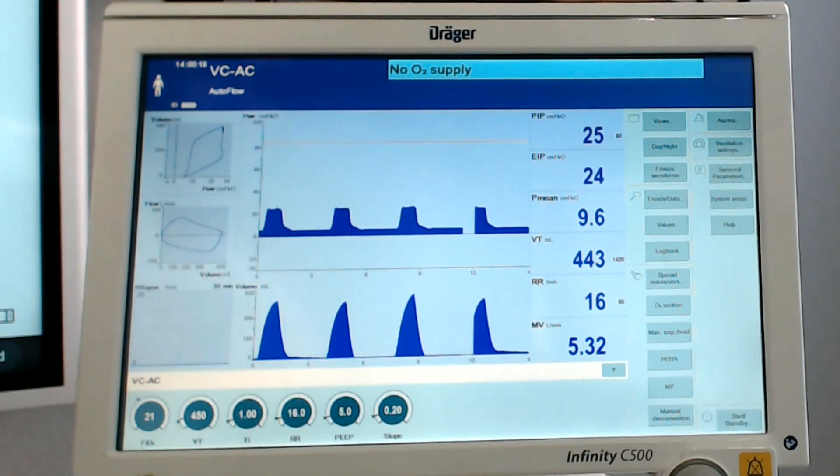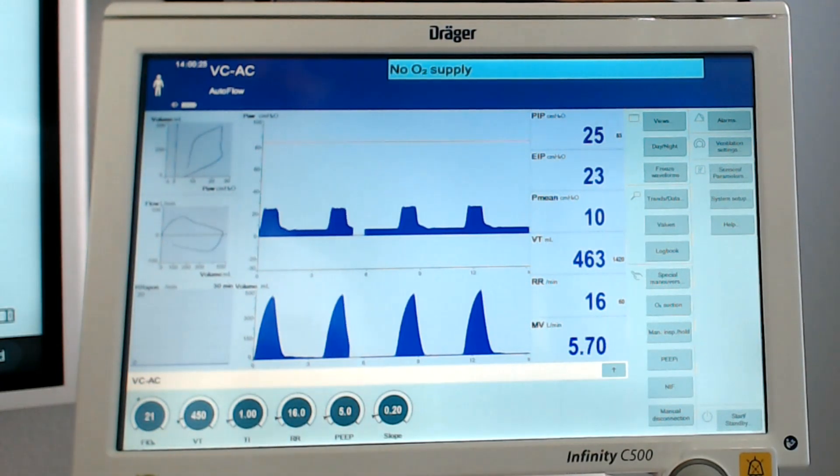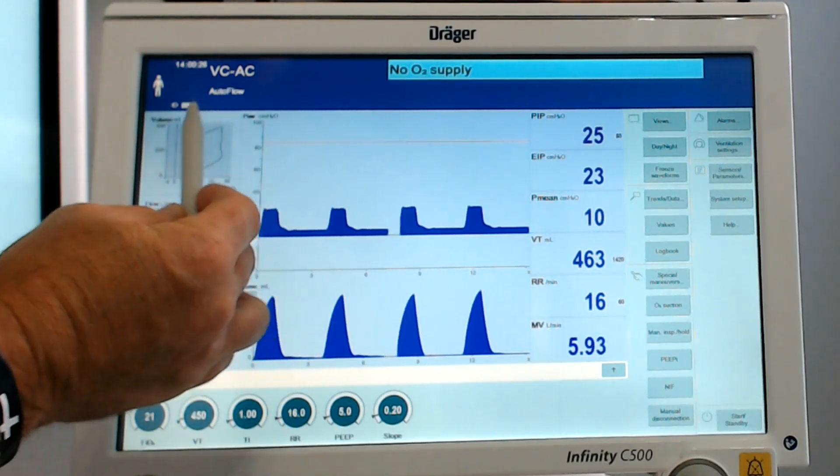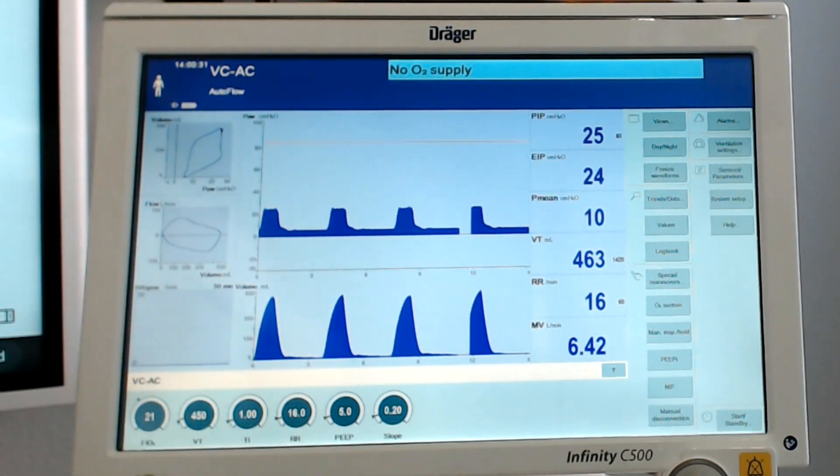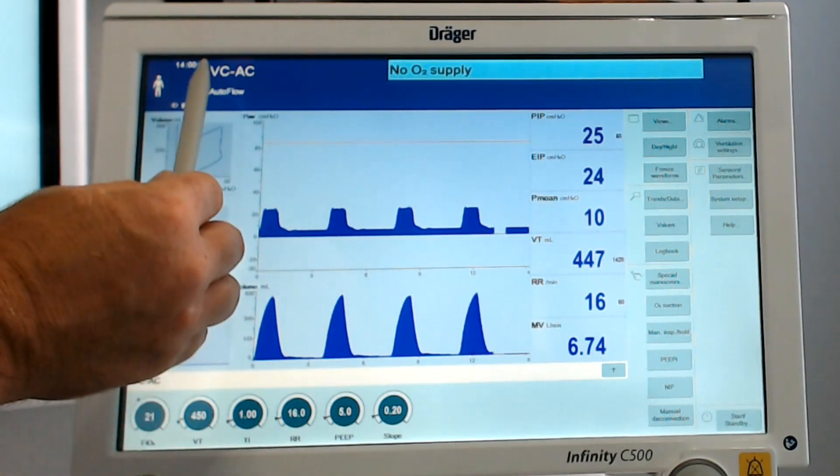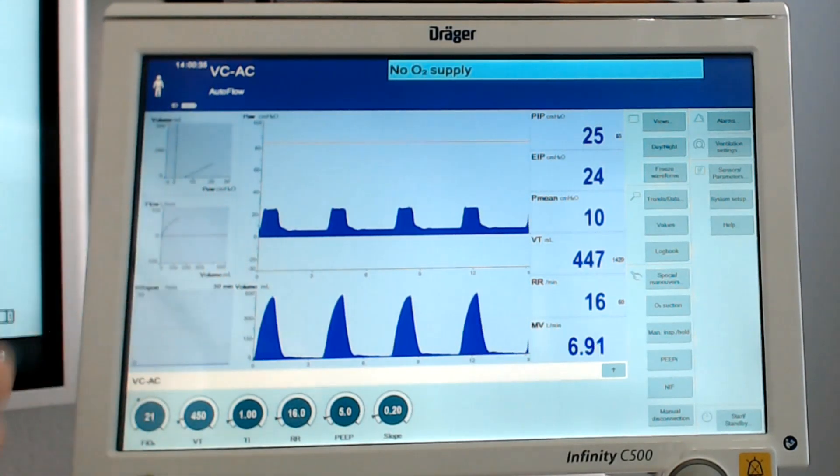Okay, so we are now in a mode that's going to look very similar to PRVC, that's pressure regulated volume control. Now the Draeger doesn't have PRVC, but it does have auto flow. And when you turn on the auto flow in the advanced settings, what that does is essentially takes volume control and turns it into a pressure regulated volume control.